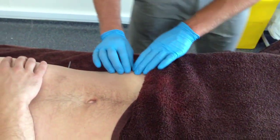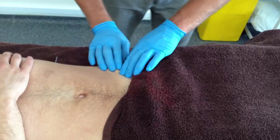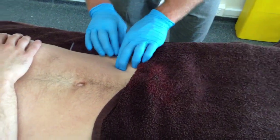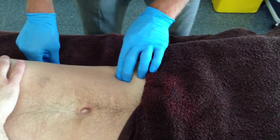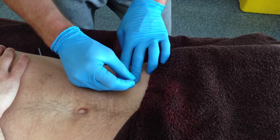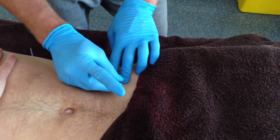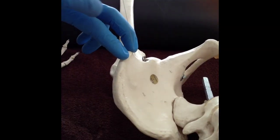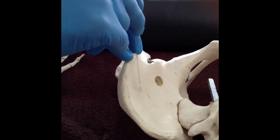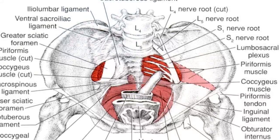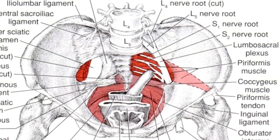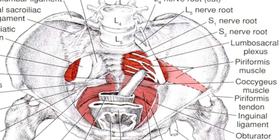To target the iliacus trigger points, the patient is laid in the supine position with the area medial to the ASIS exposed. The area of soft tissue directly adjacent to the ASIS is then palpated for. The needle is positioned between the supporting fingers and directed posteriorly towards the iliac fossa, aiming for the iliacus trigger point and staying close to the wall of the iliac fossa and away from the sciatic and femoral neurovascular structures.